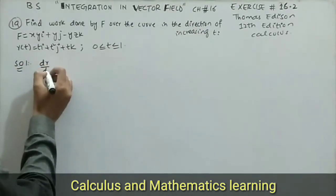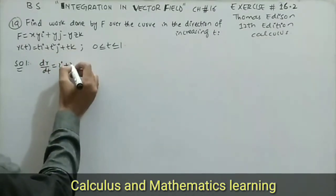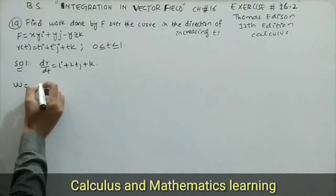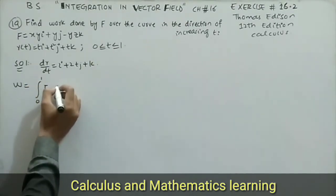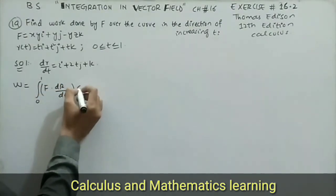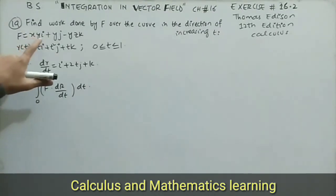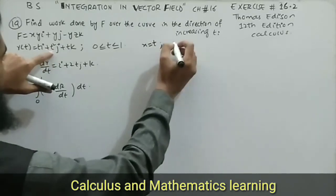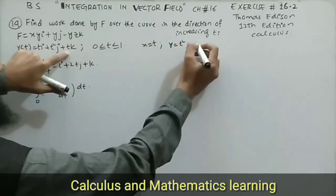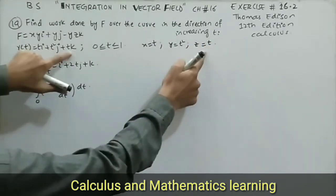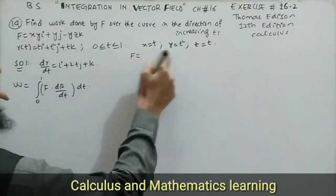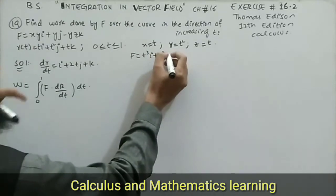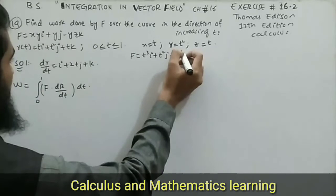Taking the derivative of r(t): dr/dt equals i plus 2tj plus k. The formula for work done is the integral from 0 to 1 of F dot (dr/dt) dt. From r(t), x equals t, y equals t², and z equals t. Substituting into F: xy equals t times t² equals t³, so F becomes t³i plus t²j minus t³k.